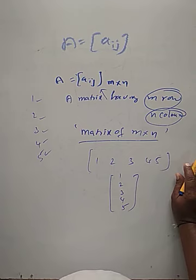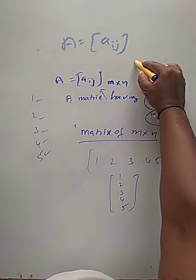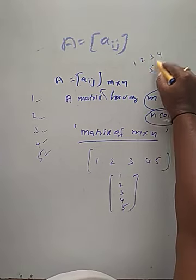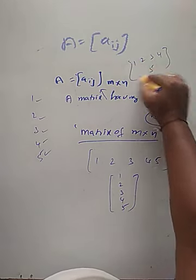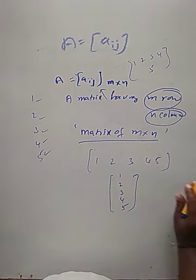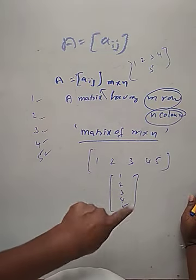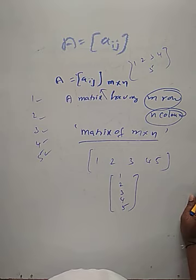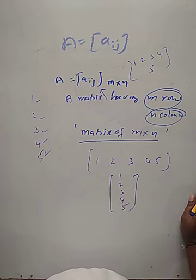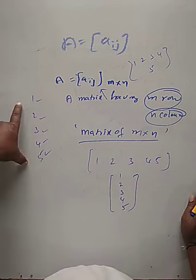Is there any third possibility — like a different arrangement? No, that would not form a valid matrix. So how many possible matrices are there? Two possible matrices. But note: those matrices are not the answer to the question 'What are the possible orders of a matrix having five elements?' The drawn matrices are not the answer — the orders are.